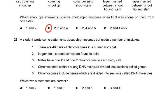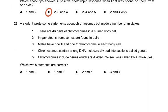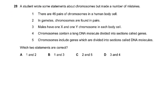Question number 28: a student wrote some statements about chromosomes but made a number of mistakes. Statement one: there are 46 pairs of chromosomes in the human body cell — that is wrong. There are 46 chromosomes, which means 23 pairs.